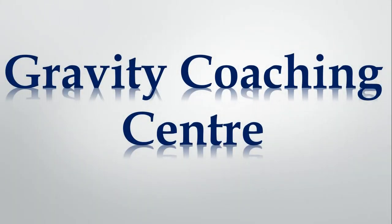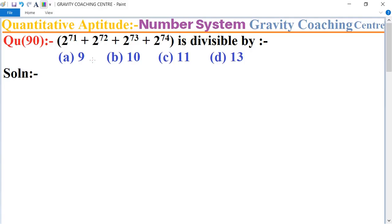Welcome to our channel, Gravity Coaching Center. Quantitative Aptitude, chapter Number System, question number 90. (2^71 + 2^72 + 2^73 + 2^74) is divisible by: